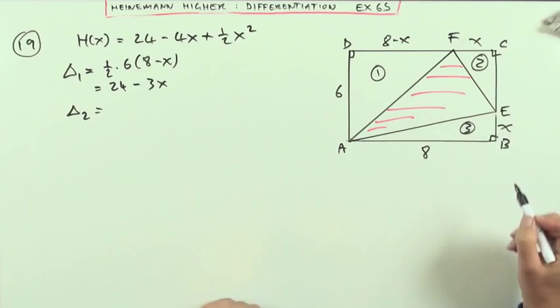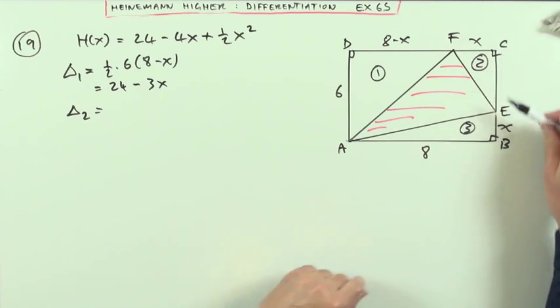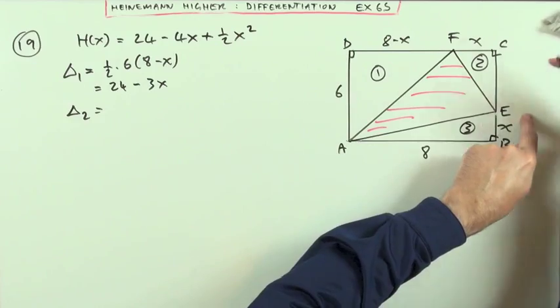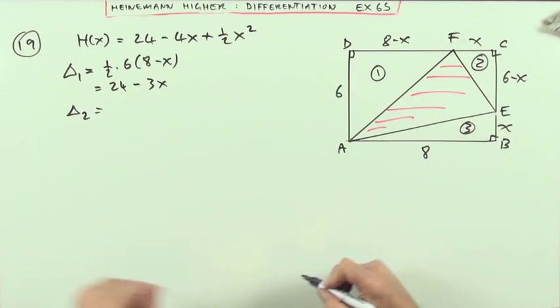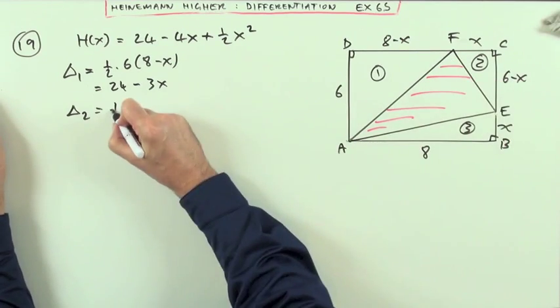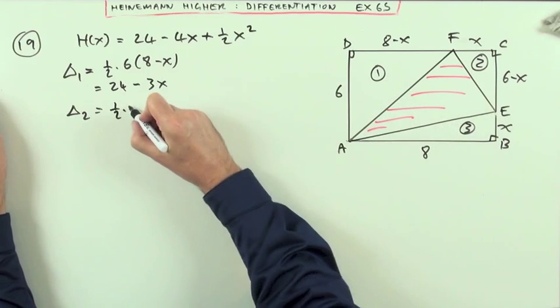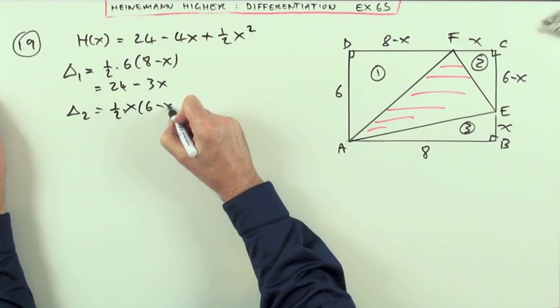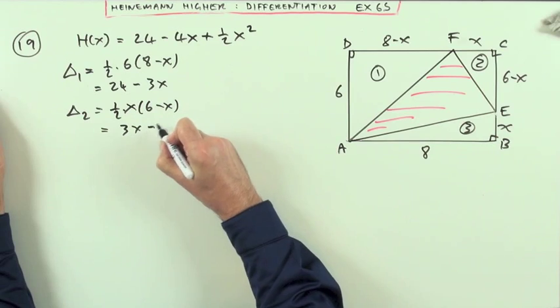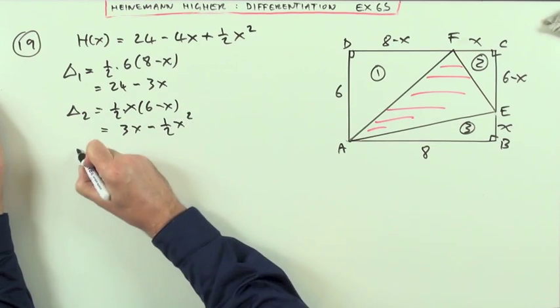Triangle 2, the one up here, well one side is X, the other side is going to be 6 minus X, so that must be 6 minus X there. So this area is going to be a half of one side times the other, a half of X times 6 minus X. Well that's going to be 3X minus a half X squared.